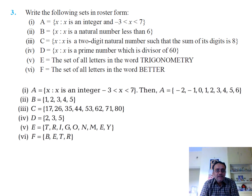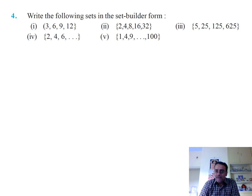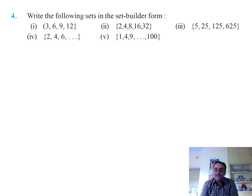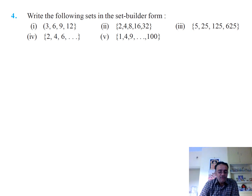Question 4: Write the following sets in set builder form. The first bit is {3, 6, 9, 12} — these are all multiples of 3. We can write this as {x : x = 3n, where n is a natural number and n ≤ 4}.